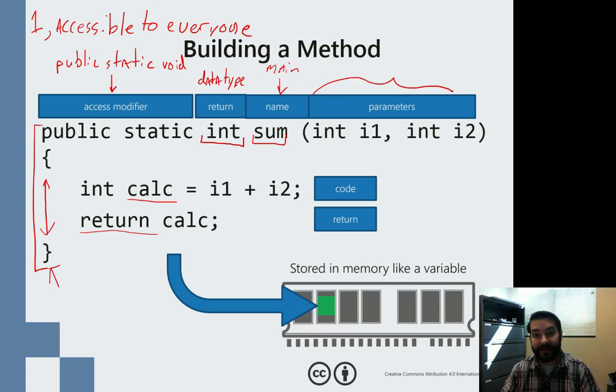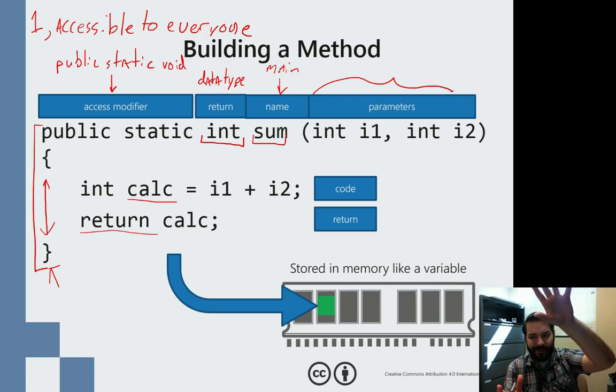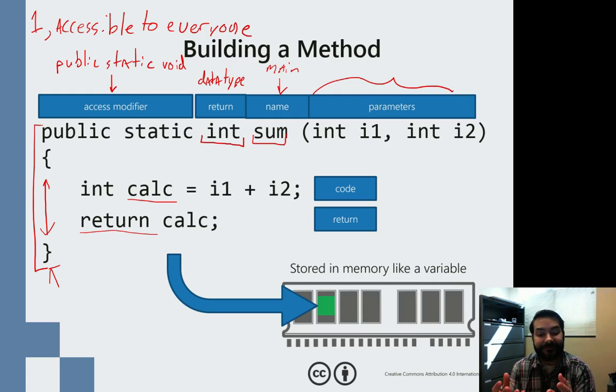And then we have a list of parameters. Now, these parameters - if we look at sort of the difference between, say for example, a method and a for loop. A method has variables and a for loop has variables. A for loop has access to any sort of variable that was created above it. Well, methods don't because, again, they're tiny little programs that live in their own tiny little world.